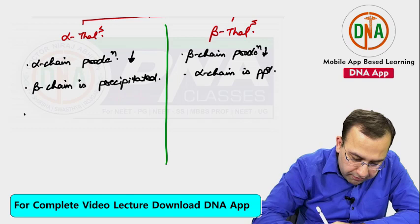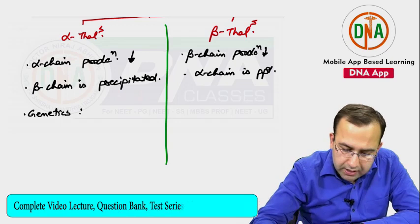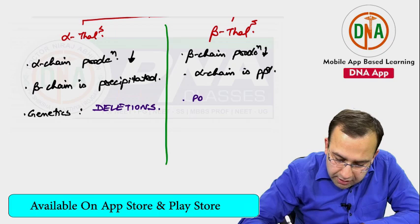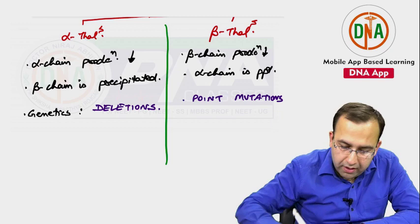Next point — genetics. Alpha thalassemia is associated with deletions, versus beta thalassemia which is associated with point mutations.